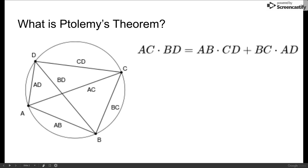The theorem states that in a cyclic quadrilateral as drawn, AC times BD, or the product of the diagonals, equals AB times CD plus BC times AD.